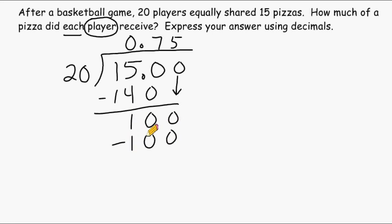So now we know that each player on the basketball team will receive 75 hundredths of a pizza. Now another way to say 75 hundredths is 3 quarters. Because if you were to express 0.75 as a fraction, or 75 over 100, that can be reduced to 3 fourths. So each basketball player on the team will receive 3 quarters of a pizza.